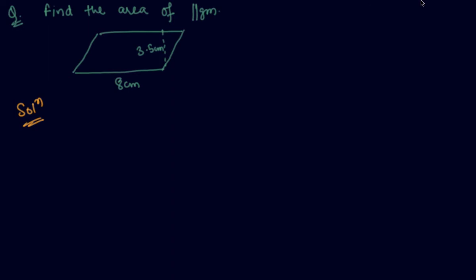So student, here is given a parallelogram in which we have to find out the area of the parallelogram. So we are given the length is 8 centimeter and the height is 3.5 centimeter. So the area of parallelogram is pretty simple. Now this is L into H means 8 into 3.5. So this will be 28 centimeter square.